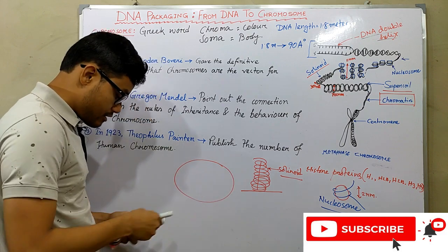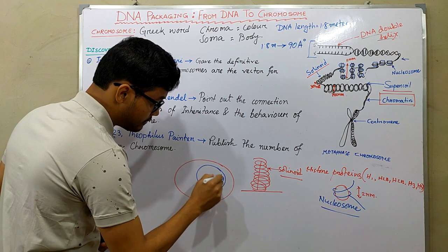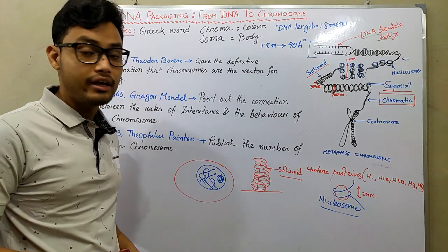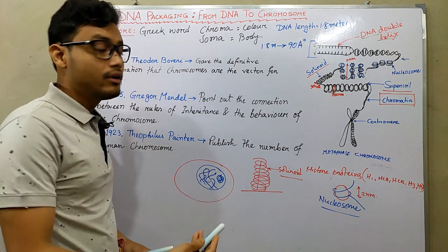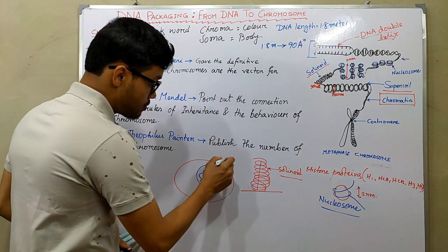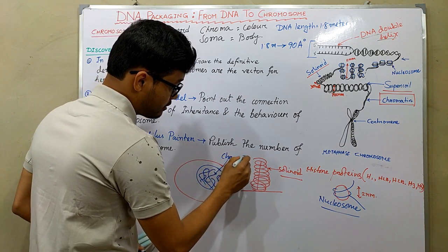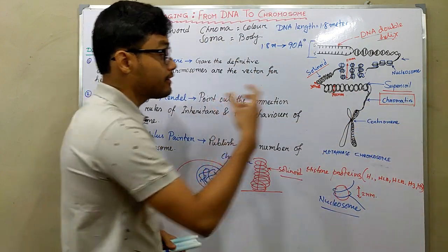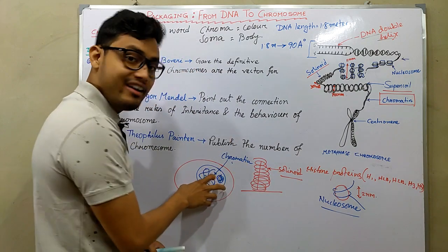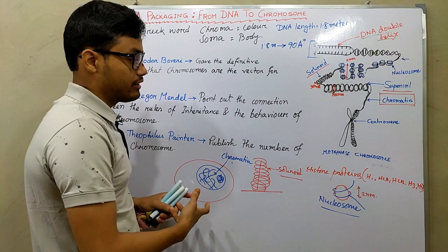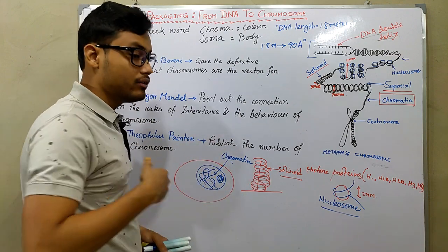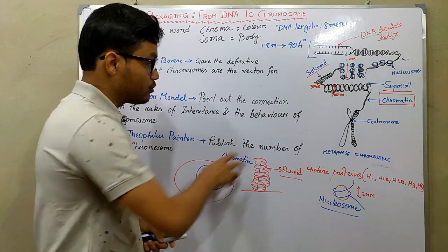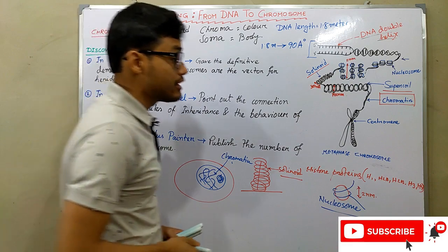Chromatin fiber is the main product. In an undividing cell — a cell which does not go through cell division — we clearly observe chromatin fiber, but not chromosomes. Chromatin fiber is the final product for an undividing cell. If this cell undergoes division, either meiosis or mitosis, it goes through the phases: prophase, metaphase, anaphase. In prophase, those chromatin fibers are compacted further and produce a chromosome.